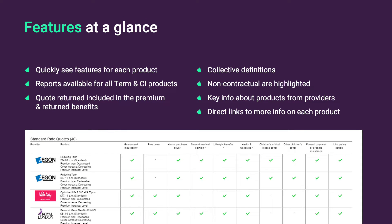Our feature reports allow you to quickly see what features are supported by each product. Feature reports are available for all Term and Critical Illness products. Features highlighted as available are part of the quote returned, meaning they are included within the premium and based on the returned benefits. Collective feature definitions are provided helping you better understand provider-specific terminology. Non-contractual features are also highlighted, and providers can include key information about their products including direct links to their extranets or documents to find out more.